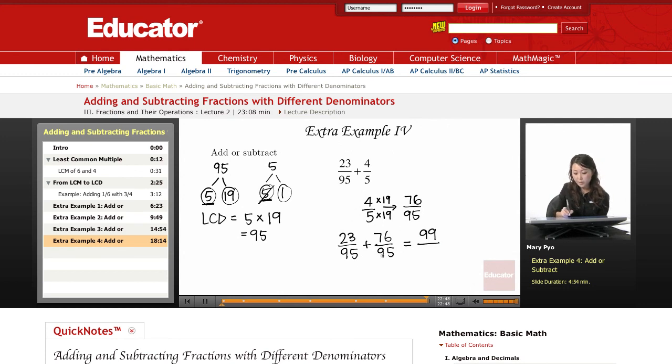Now here, denominator stays the same, so it's 95. 95 here, 95 here, so my denominator is going to become 95. So 23 over 95 plus 4 over 5 is 99 over 95. That's it for this lesson. Thank you for watching educator.com.